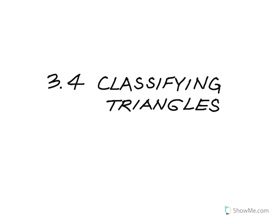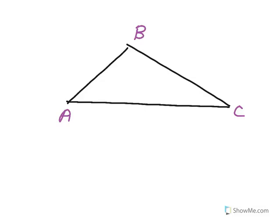This is a lesson on classifying triangles. Triangles are polygons that consist of three sides and three corners or vertices. Each vertex has an angle, and we already know that the sum of the measures of those angles equals 180 degrees.